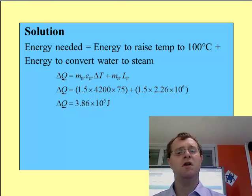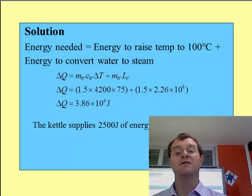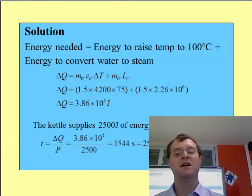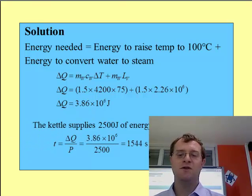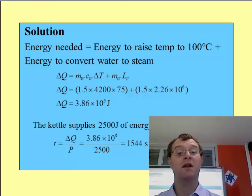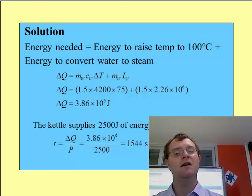As we know the power rating, from that we should be able to work out that 2,500 joules is provided every second. If we divide the amount of energy required by 2,500 joules, it gives us the amount of seconds, which is 1,544, and we can work out as 25 minutes and 44 seconds for it to be boiled away completely. The important section is to recognize the energy going in and the different sections which we need to calculate that the energy is being used for.